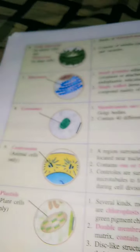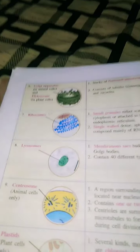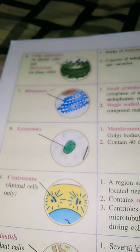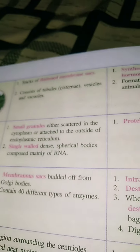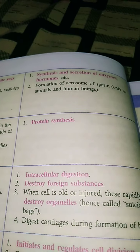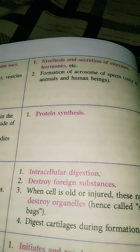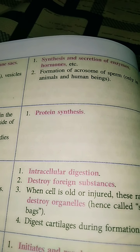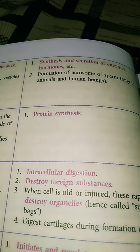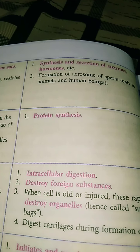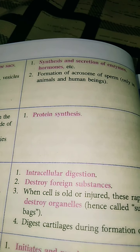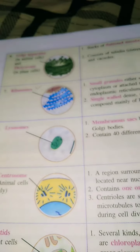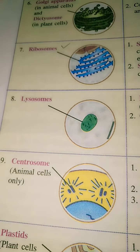Today we continue with cell organelles. Yesterday we finished up to the Golgi apparatus, and today we move to ribosomes. Ribosomes are the smallest cell organelle, present in both plant and animal cells. The most important function carried out by ribosomes is protein synthesis. Proteins are required for the growth and development of the entire cells and body of the organism.